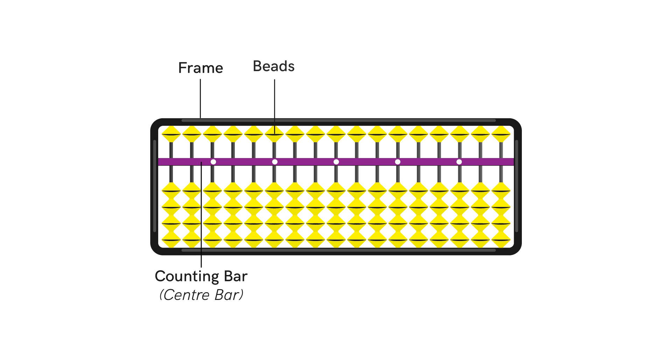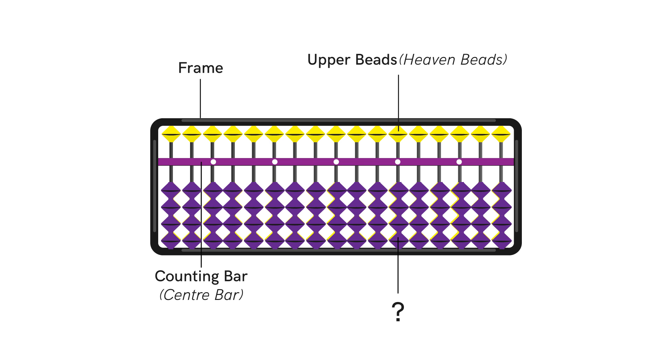Children, now listen carefully. The beads above the counting bar are called upper beads or heaven beads. So, can you guess what the beads below the counting bar are called?